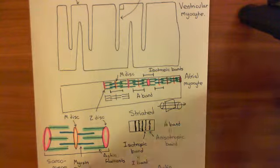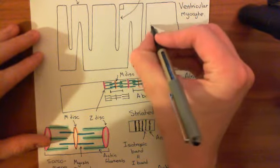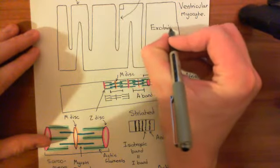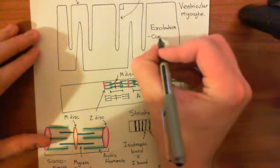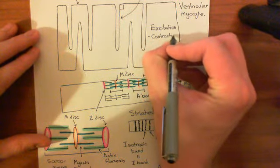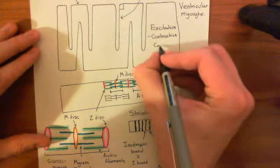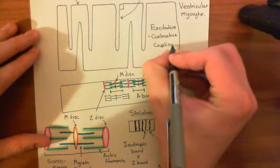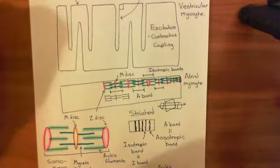How are we going to couple the excitation at the membrane to contraction? So, excitation-contraction coupling. This is done by converting the electrical signal of an action potential into a calcium signal, which we can then use to trigger contraction of the sarcomeres.